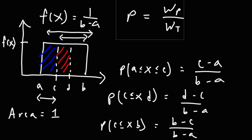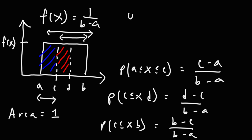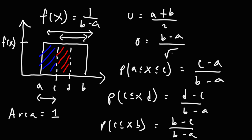For a uniform distribution, here are some other formulas you need to know. The mean is going to be the arithmetic mean of a and b — it's the sum of a and b divided by 2. The standard deviation is b minus a divided by the square root of 12. Again, you can find all of these formulas in the formula sheet in the description section.